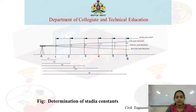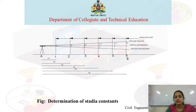This is the diagram for this experiment. Here, A is the theodolite station and B is another station located at a known distance. The distance from A to B is known.